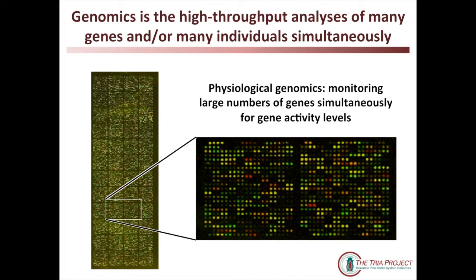We can now do what they did in a matter of a few days or even a few hours using new technologies, and we don't have to do them on big instruments — we do them on little tiny instruments. One of those instruments is the size of a microscope slide. This is called a microarray, and on this particular array you have 25,000 different gene sequences spotted on a tiny nanomolar scale. You can't see these spots with the naked eye — you need a laser to see them.